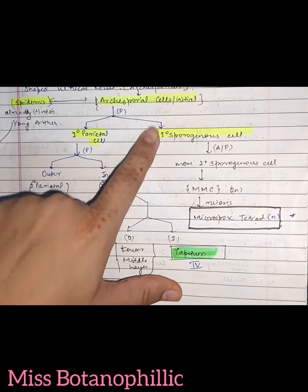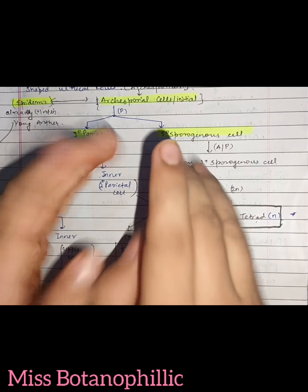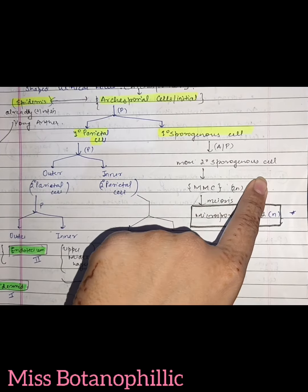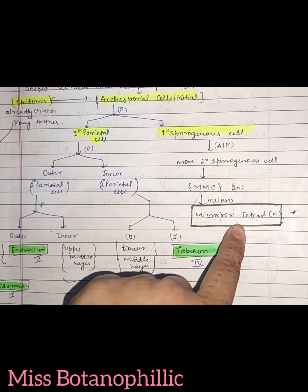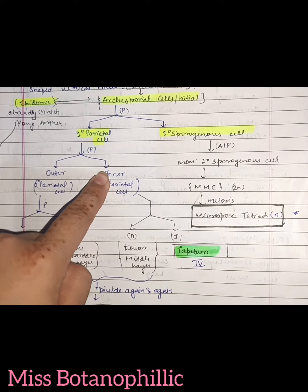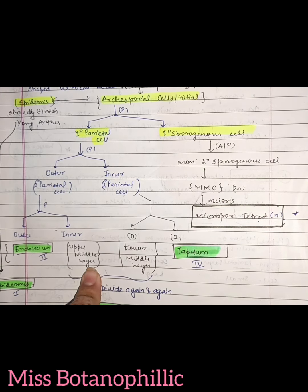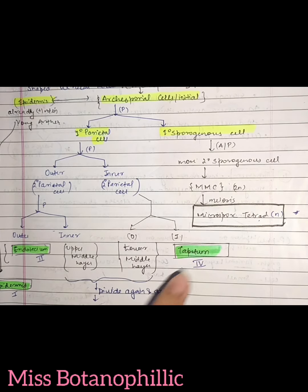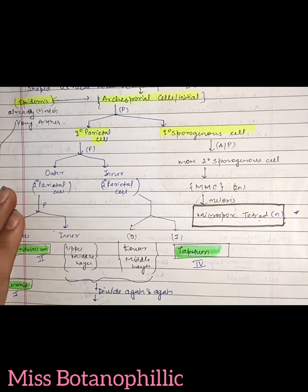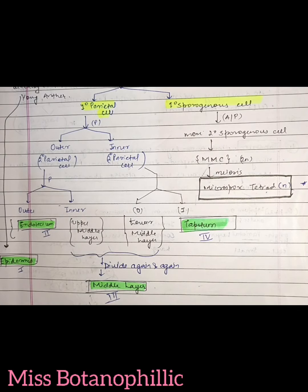Once again, reviewing the flowchart: the archesporium initial divides into the primary parietal cell and primary sporoginous cell. The primary sporoginous cell undergoes anticlinal and periclinal division to form secondary sporoginous cells. The primary parietal cell forms the outer and inner secondary parietal cells. The outer secondary parietal cell forms the endothecium, and the inner secondary parietal cell forms the lower middle layer on the outer side and the tapetum on the inner side. The middle layers divide to form the final middle layer. In the mature anther, there are microsporangia, tapetum, middle layer, endothecium, and epidermis.